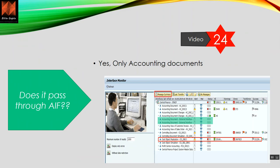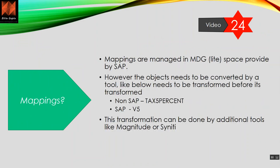Mappings are managed in MDG Lite. To explain the transformation: in non-SAP systems, a tax code might be expressed as a percentage, like '5%', which could be 10+ characters. But in SAP, a tax code is only two characters — for example, V0 for exempt, A1, A2 for input/output tax. This transformation from non-SAP format to SAP format must happen before data enters the SLT staging tables.